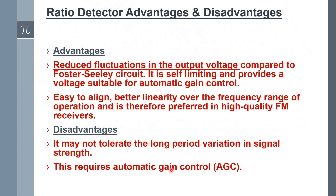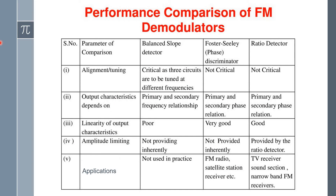The ratio detector has some advantages and disadvantages. Main advantages: it acts as an amplitude limiter, reduces fluctuation in the output voltage compared with the Foster-Seeley discriminator, is easy to align, and has better linearity over the frequency range of operation. It is therefore preferred in high-quality FM receivers. Disadvantages: it may not tolerate long-period variation in signal strength, and it requires automatic gain control (AGC).